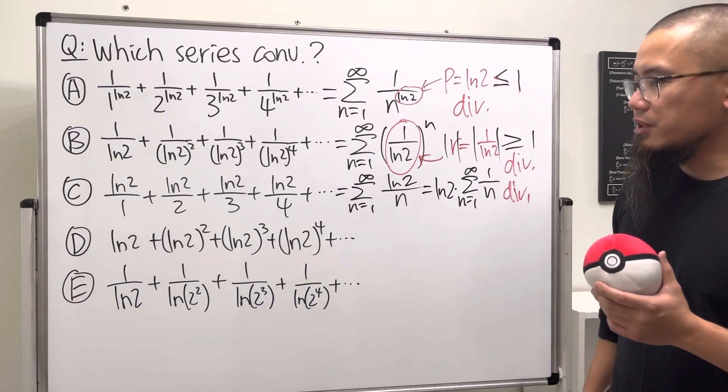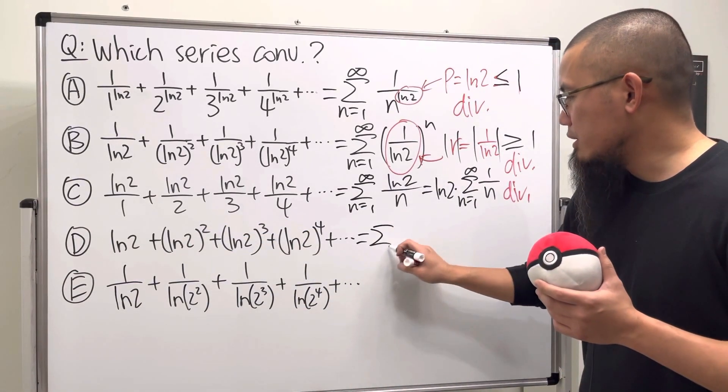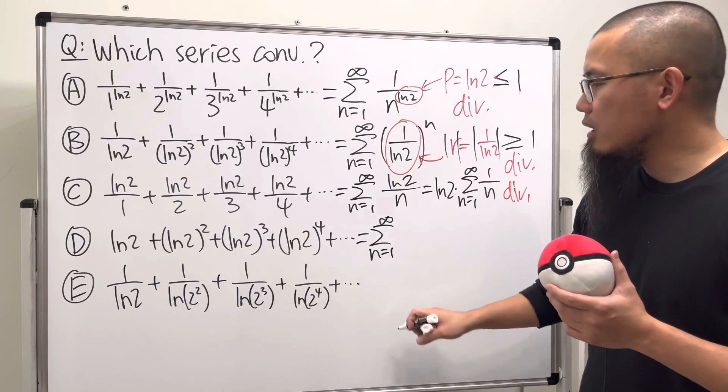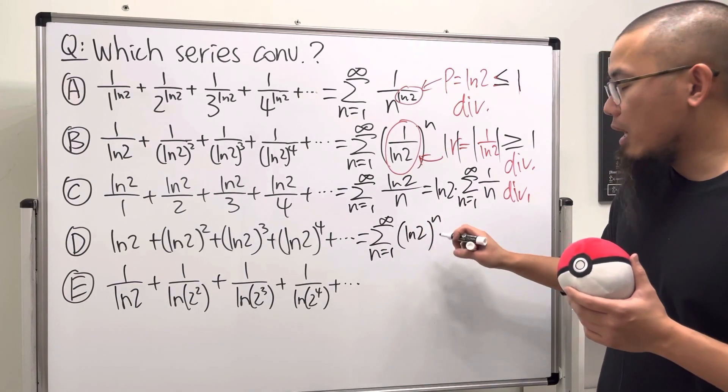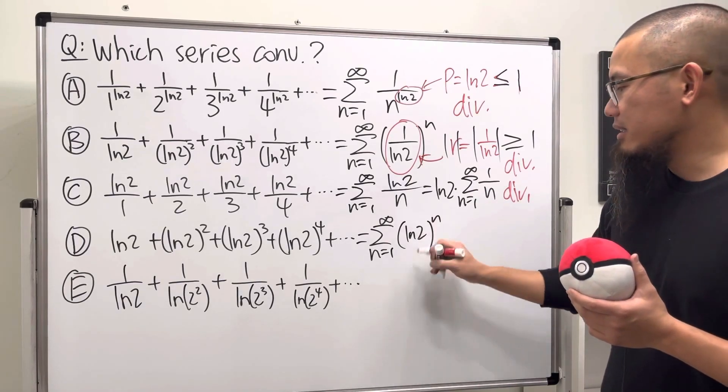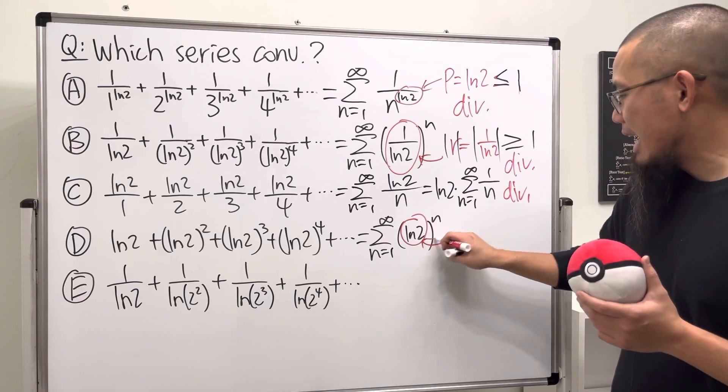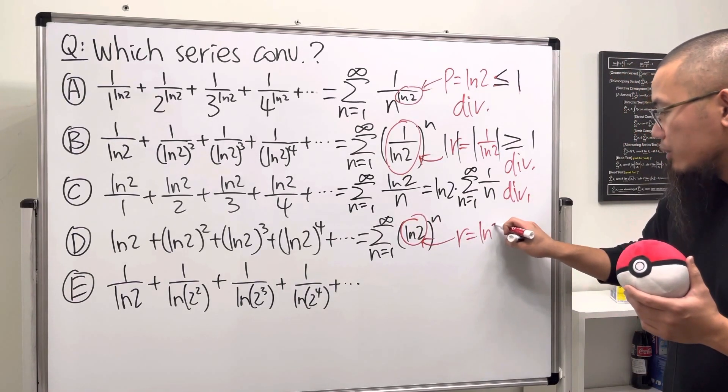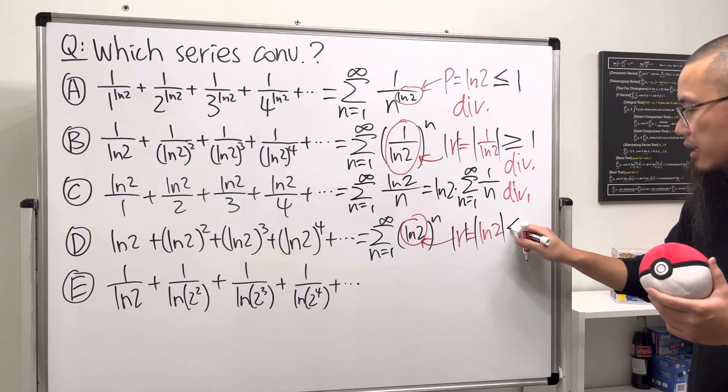Now D. This right here, it's the series as n goes from one to infinity. We have ln2 raised to the nth power. In fact, this is a geometric series as well. This time r is ln2.